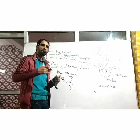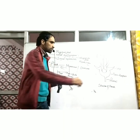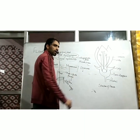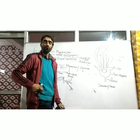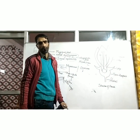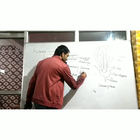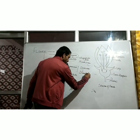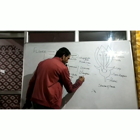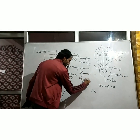But a dioecious plant is one which is animal-like, human-like — it shows dimorphism. There is a separate male plant and a separate female plant.